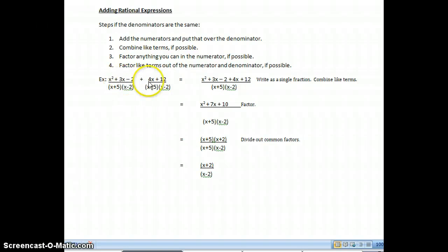Whatever I see on the left plus whatever I see on the right. Now I'm going to combine my like terms, so x squared just comes down, 3x plus 4x gives me 7x, and minus 2 plus 12 gives me plus 10.